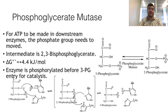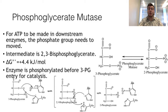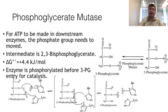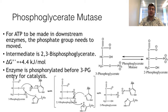The eighth step is catalyzed by phosphoglycerate mutase. A mutase is a form of isomerase that catalyzes the movement of a functional group within the same molecule. This mutase is required because the following enzymes need phosphate on the second carbon for proper activity. The reaction is essentially at equilibrium, with a 2,3-bisphosphoglycerate intermediate. This enzyme relies on two histidine side chains for activity, one of which is phosphorylated before 3-phosphoglycerate enters the active site. This is notable because histidine is not as frequently phosphorylated as serine, threonine, or tyrosine.